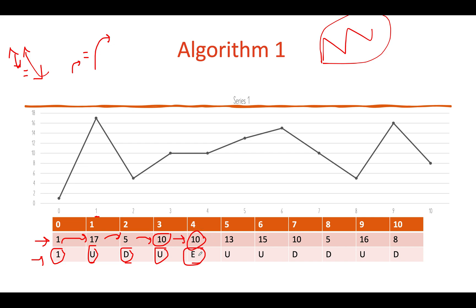Then we have an uphill again, so I assign U here. Then we have an uphill again, U here again. Then we have D. 5 is again less than 10, we have D again. Then we have 16, which is greater than 5, that means we have an uphill U. And then again a downhill, 8 is less than 16. So in the end what states do we have? U, D, U, E, U, U, D, D, U, and D.